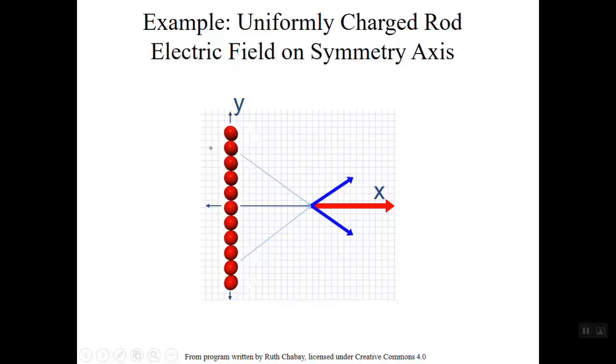For each piece of the rod above the symmetry axis, there's a corresponding piece located symmetrically below the symmetry axis. The blue arrows illustrate the E fields due to these two pieces. We can see the y-components of the blue arrows will cancel each other, that is, add to zero, while the x-components will add to something non-zero, illustrated by the red arrow.